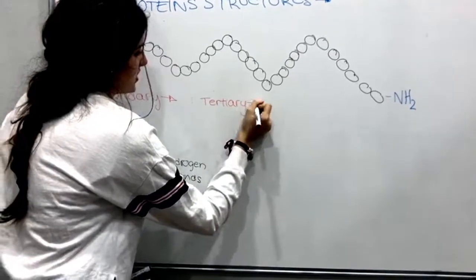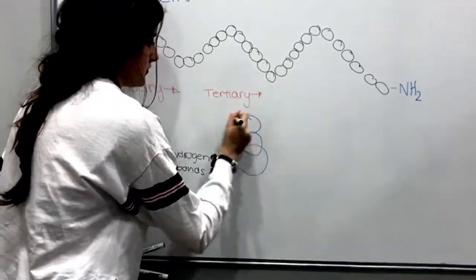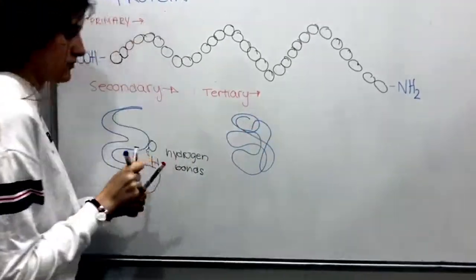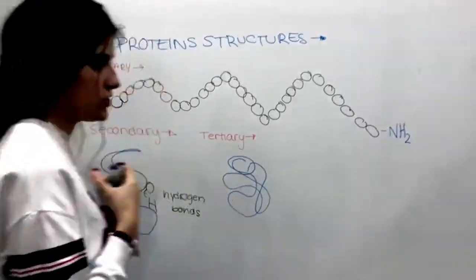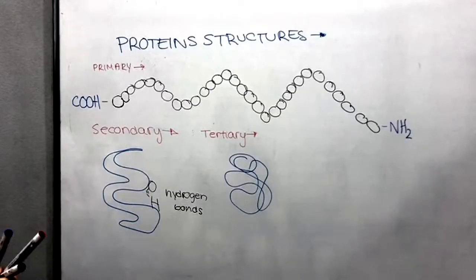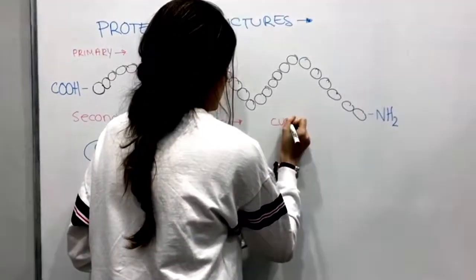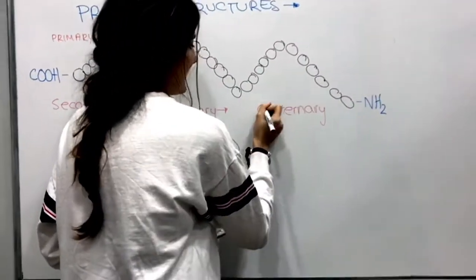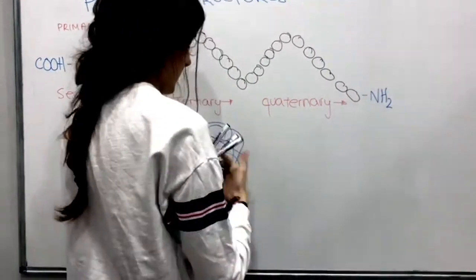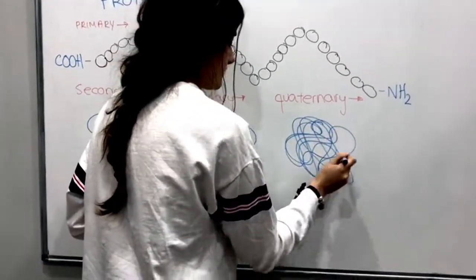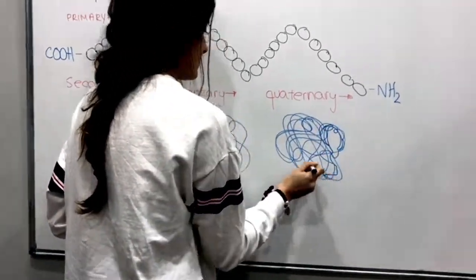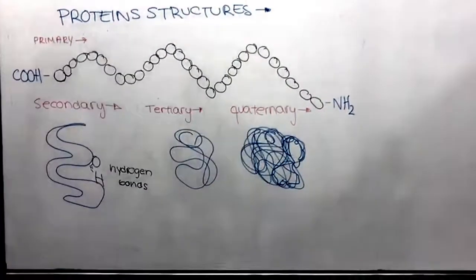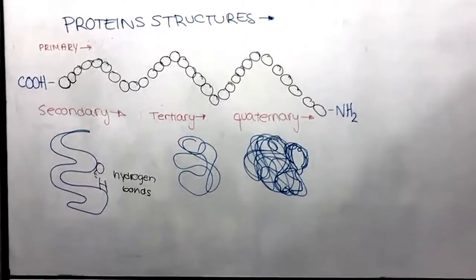In tertiary structure, the alpha helix and beta sheets are folded into a compact globular structure. This folding is driven by nonspecific hydrophobic interactions. The quaternary structure consists of the aggregation of two or more individual polypeptide chains that operate as a single functional unit.